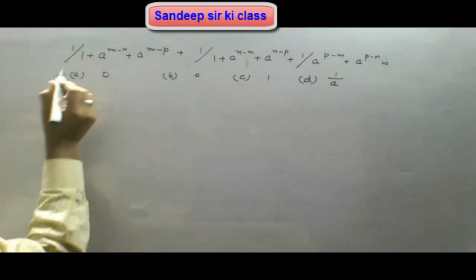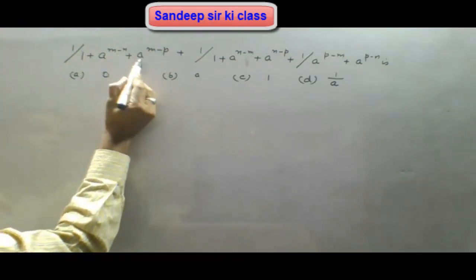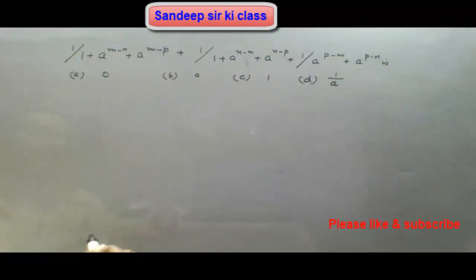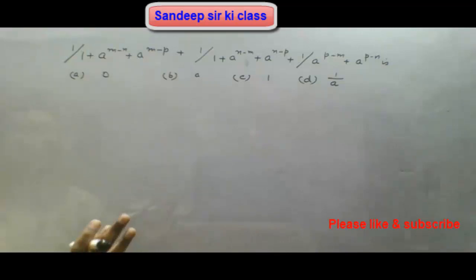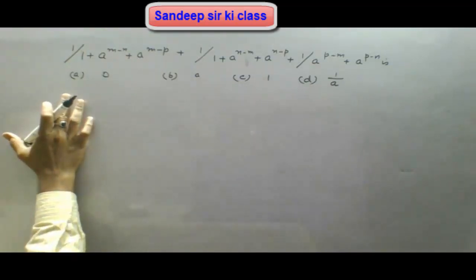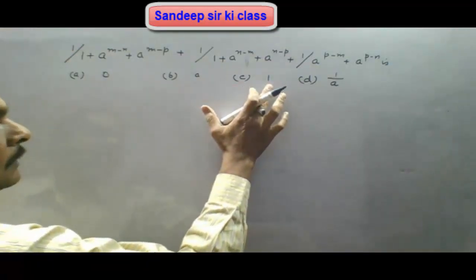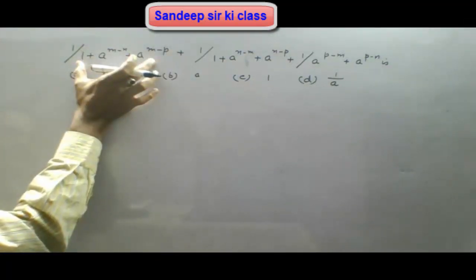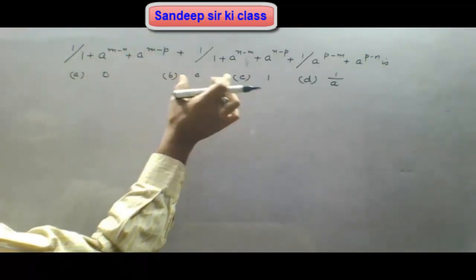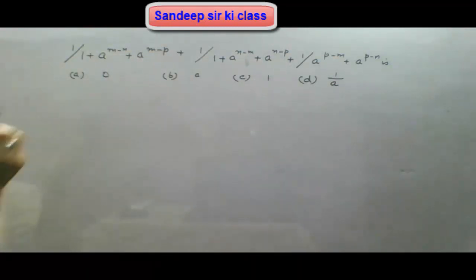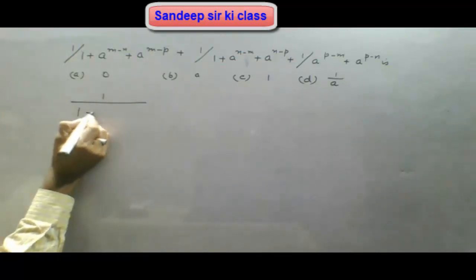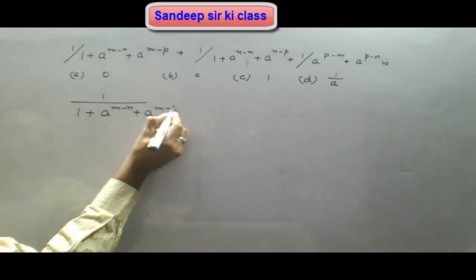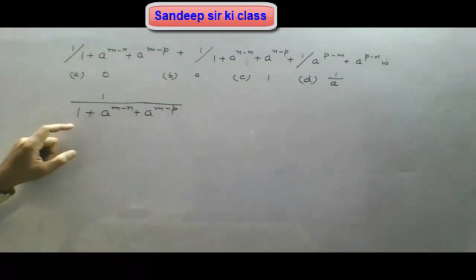The next question is: 1 upon (1 plus a^(m-n) plus a^(m-p)) plus the other similar terms, where m, n, and p are written in cyclic order. We look at the first term: 1 upon (1 plus a^(m-n) plus a^(m-p)). We will simplify the first term, and on that basis similarly write the second and third terms.